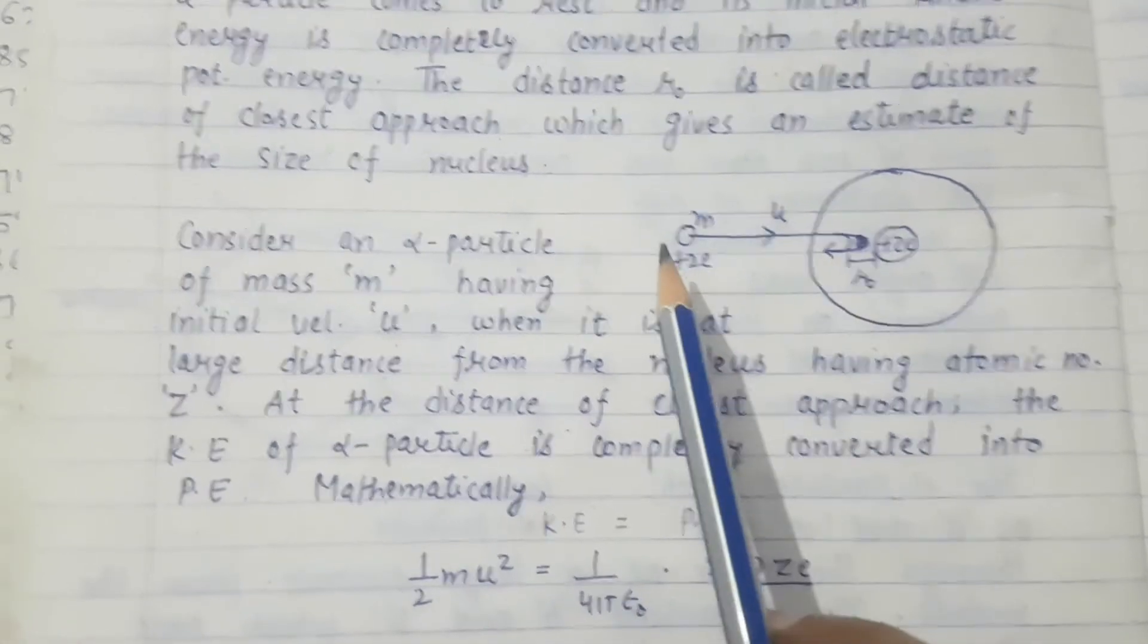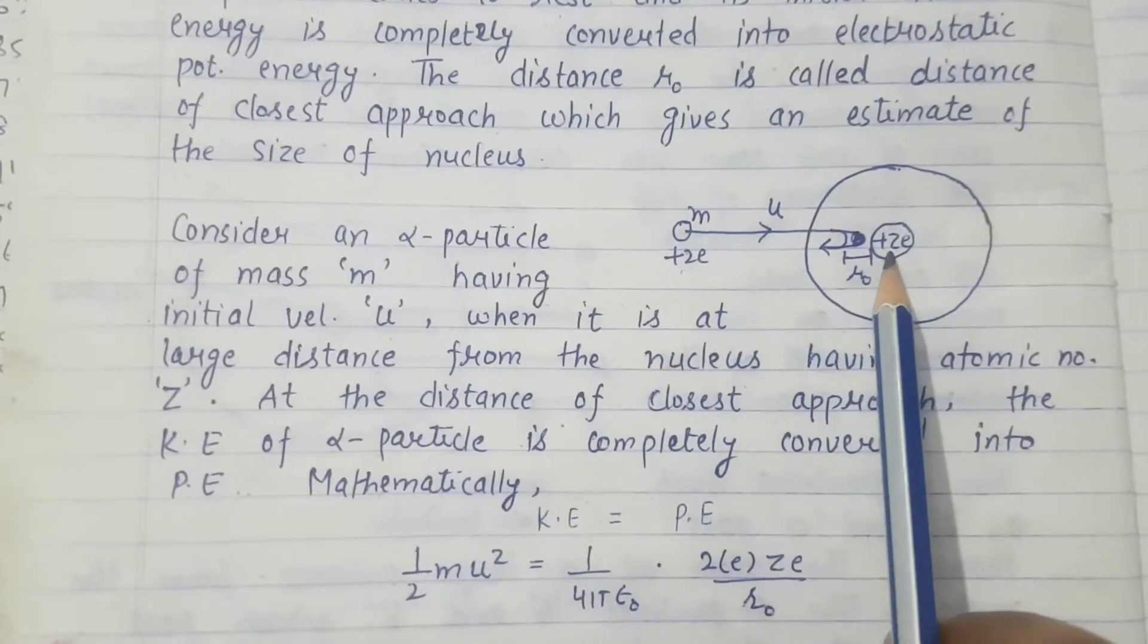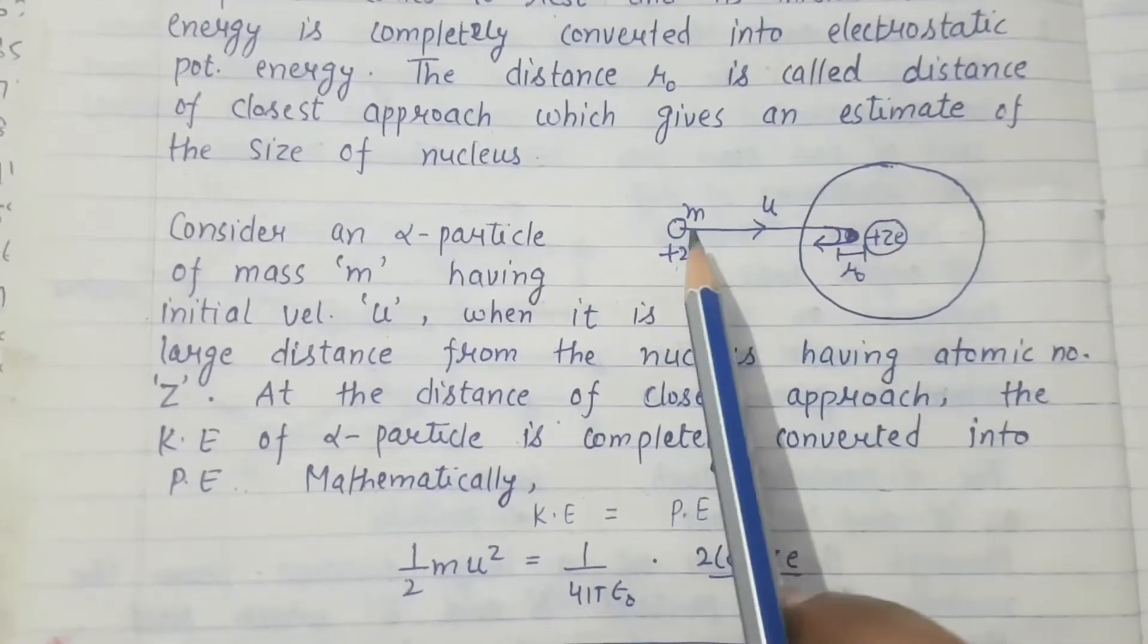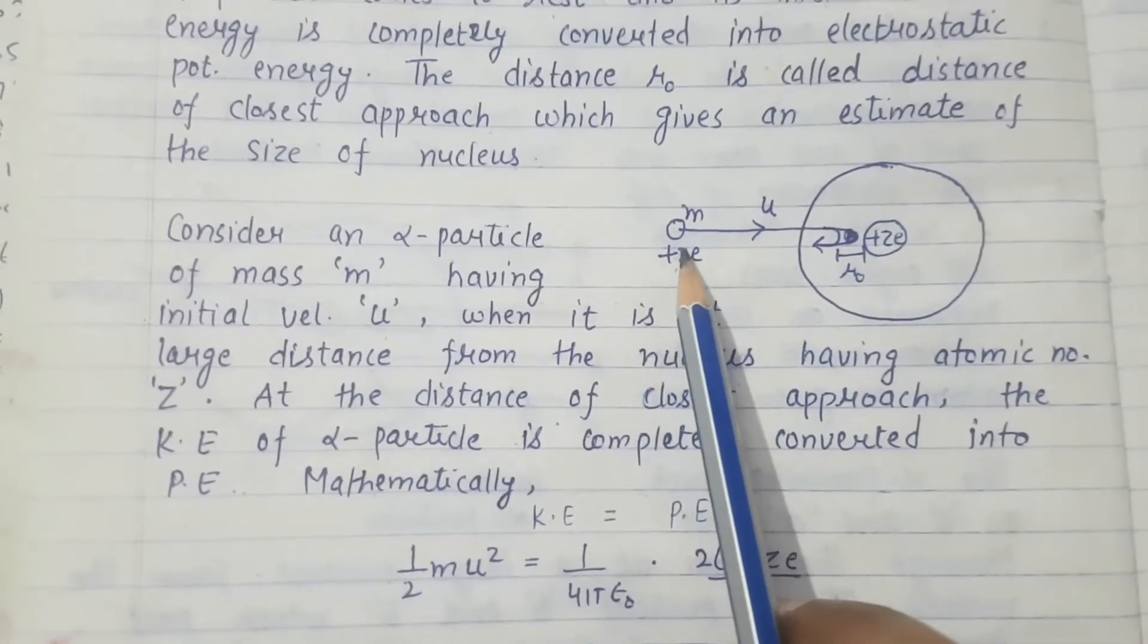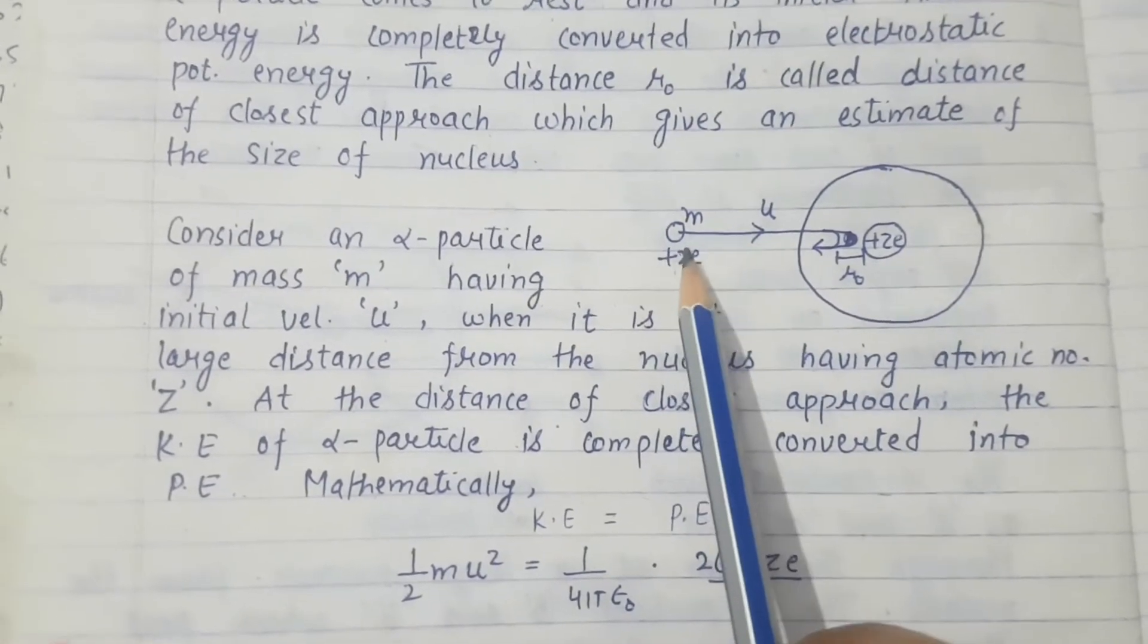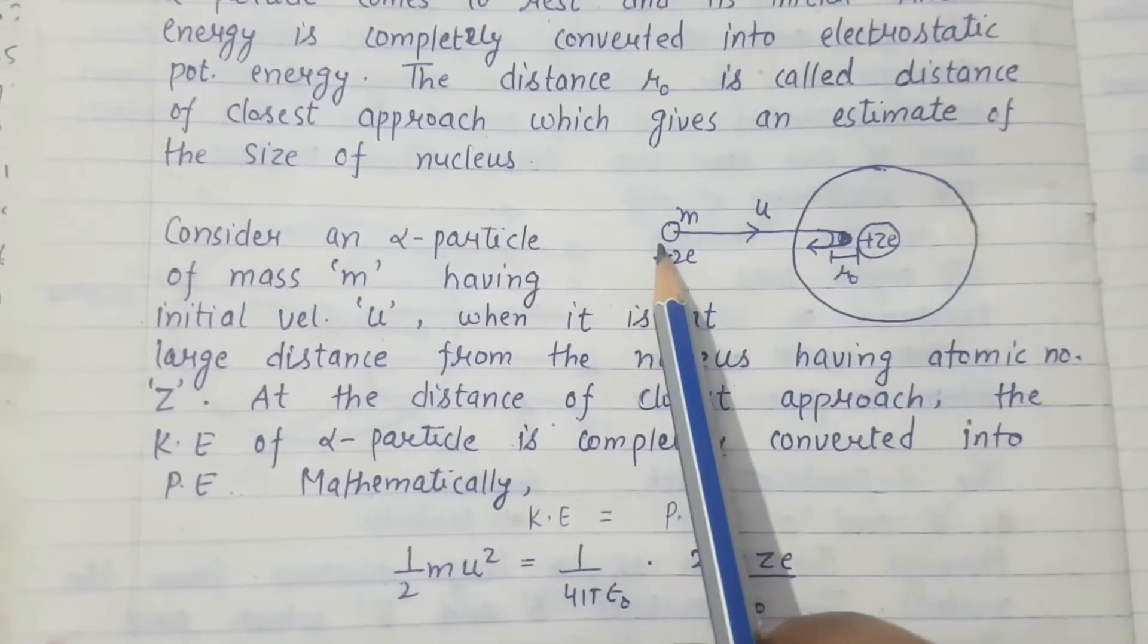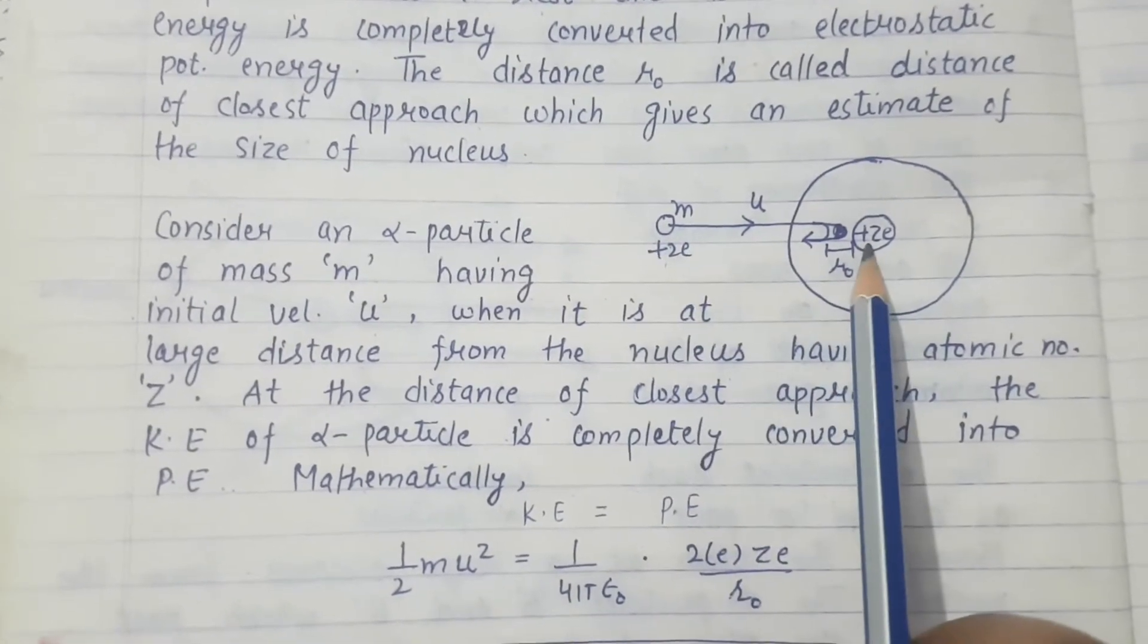This big circle shows the structure of the atom which is having a nucleus with charge plus ZE. The alpha particle is initially very far away from the nucleus. This alpha particle is moving towards the nucleus.